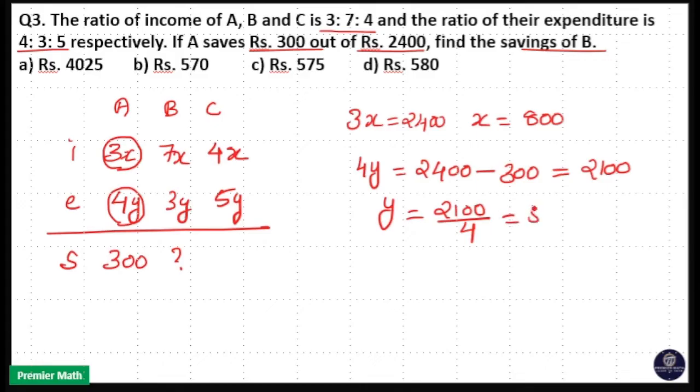That is 2400 minus 300 is equal to 2100. So y is equal to 2100 divided by 4, that is 525.